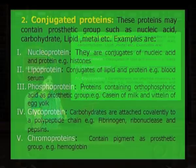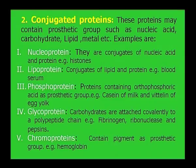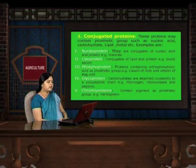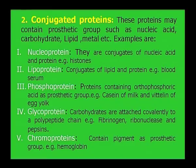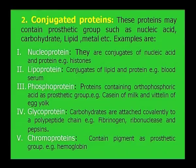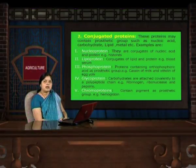The second class is lipoproteins, which are conjugates of lipid and protein; an example is blood serum. Phosphoproteins contain phosphoric acid as the prosthetic group; examples are casein of milk and vitellin of egg yolk. When carbohydrates are covalently attached to the protein part, it forms glycoproteins; examples are fibrinogen, ribonuclease, and pepsin. Chromoproteins, also called pigment proteins, have a prosthetic group attached to the protein part; for example, hemoglobin, which is present in RBCs and carries oxygen from one cell to another.